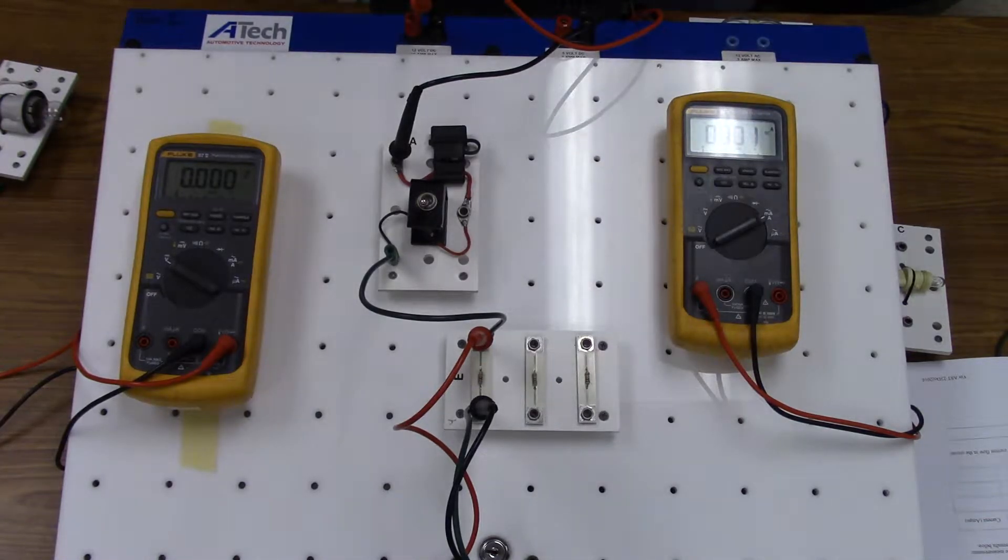In this experiment we're going to demonstrate that if the voltage remains the same, changes in resistance will inversely affect the current flow.